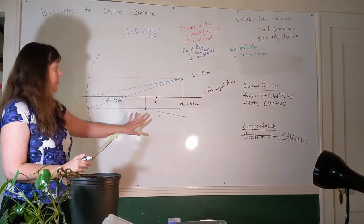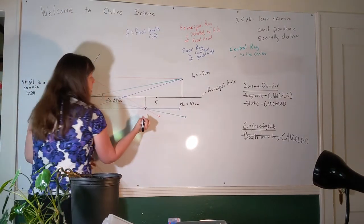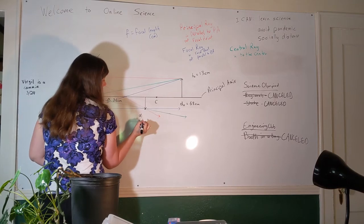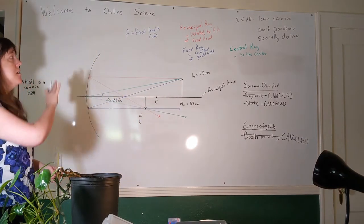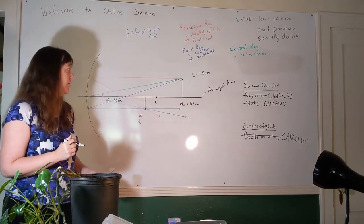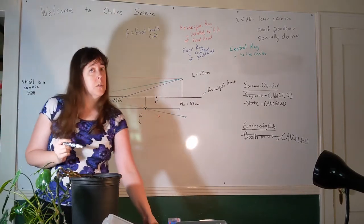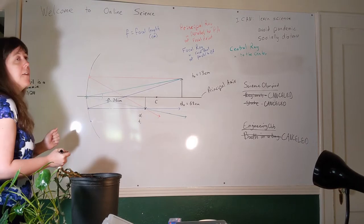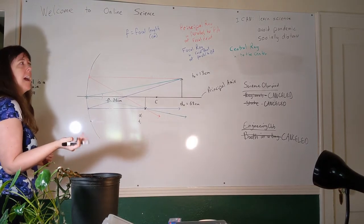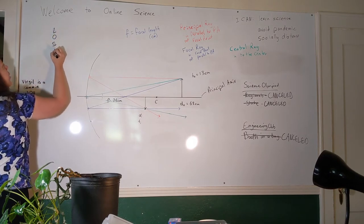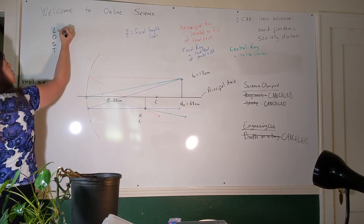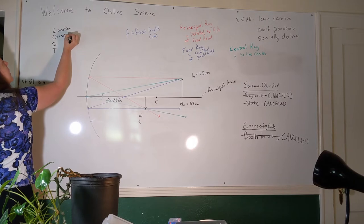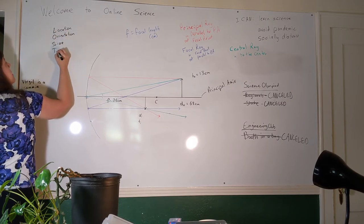We can measure similar properties for the image as we did for the object — image distance, which is how far the image is from the mirror, and image height. We'll measure and calculate those on Wednesday. We can talk about the properties of this image without numbers using the acronym LOST: L stands for location, O stands for orientation, S stands for size, and T stands for type.